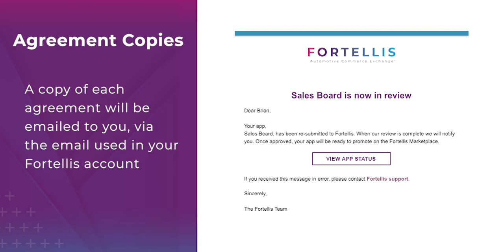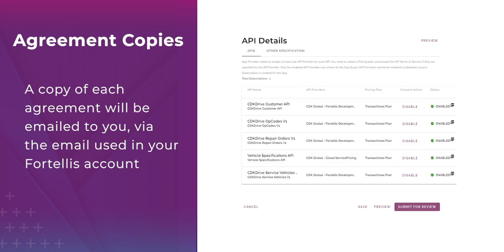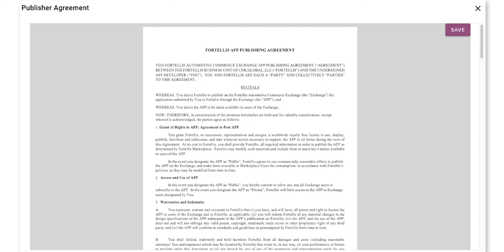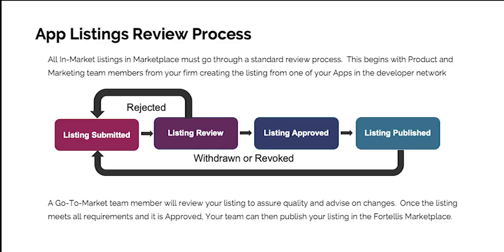In each case, a copy of the agreement will be emailed to you via the email address used in your Fortelis account. After you have enabled each API, click the Submit button on the bottom right of your screen again. You'll now be presented with the Fortelis Publisher Agreement using the DocuSign workflow. In our next video, we'll take a closer look at the review process and how to publish your listing upon approval.